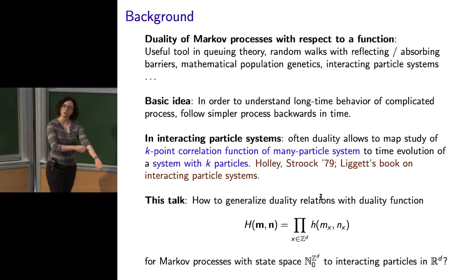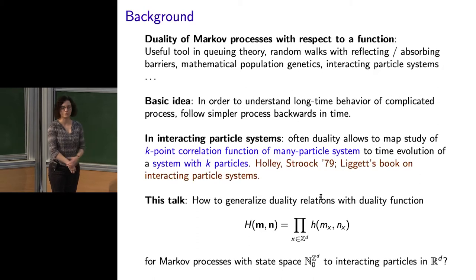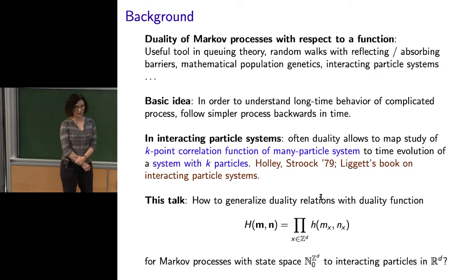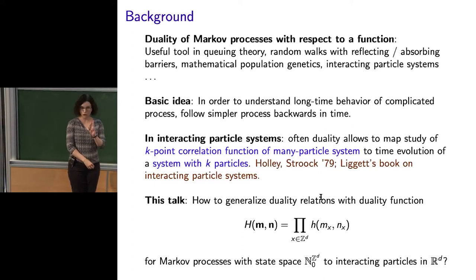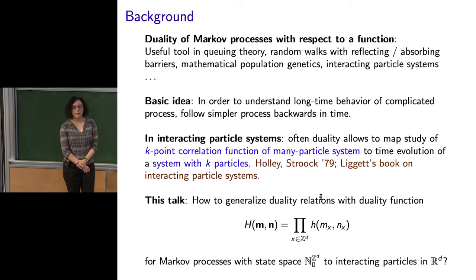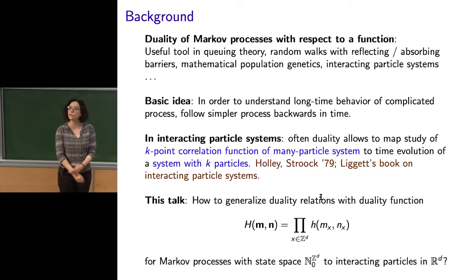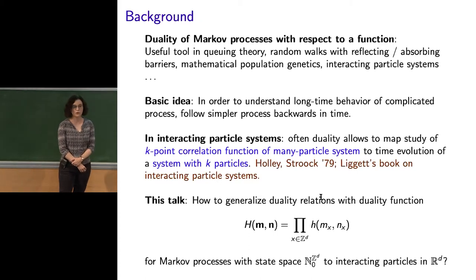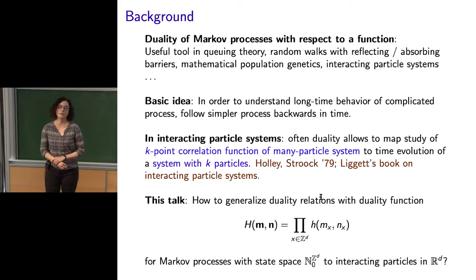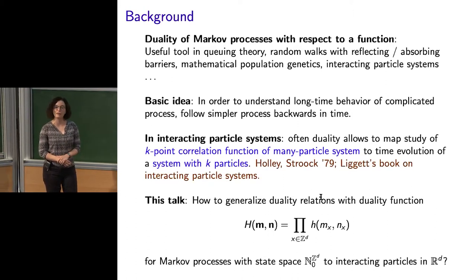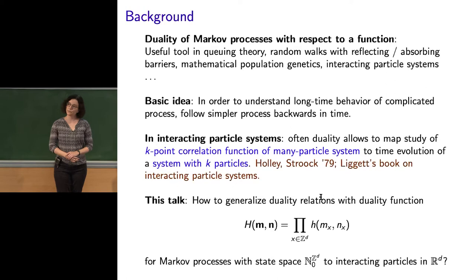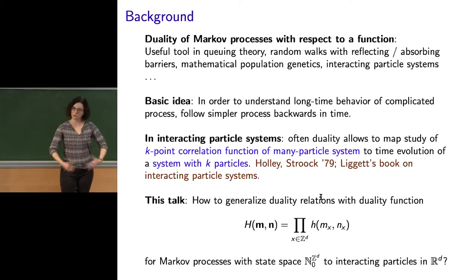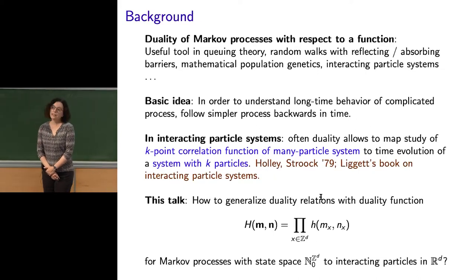Let me first say some words about the background and where I'm coming from for this project. The notion of duality of Markov processes with respect to a function — not with respect to a measure — is a very popular notion. It's used in queuing theory, it's used when you want to relate random walks or diffusions with absorbing or reflecting barriers, and in mathematical population genetics and interacting particle systems.